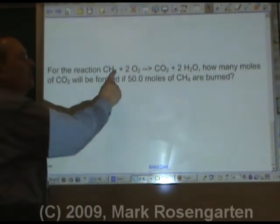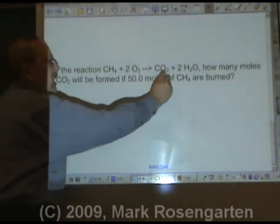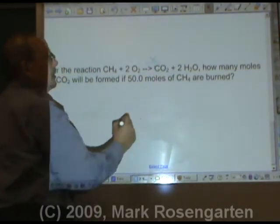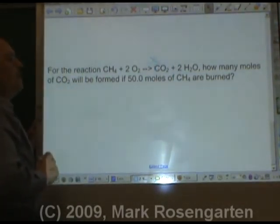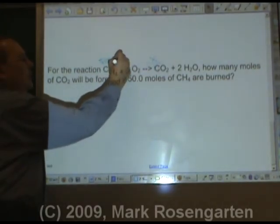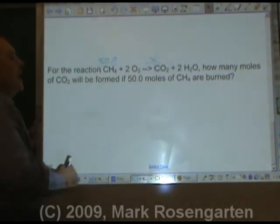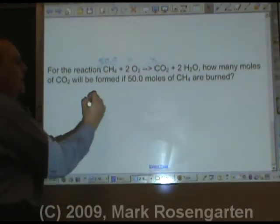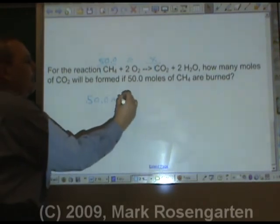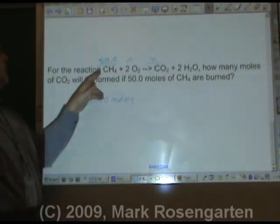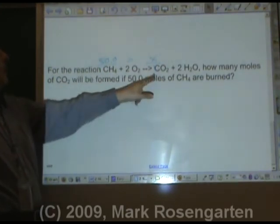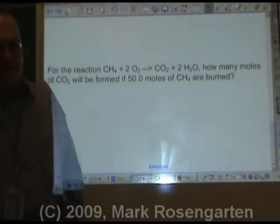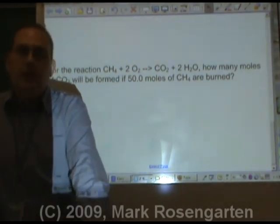For the reaction methane plus two oxygens forms carbon dioxide plus two waters, how many moles of CO₂ will be formed if 50 moles of CH₄ are burned? Now since it's a one to one ratio, you've just solved the problem. 50.0 equals X, 50.0 moles. If we got 50 moles of CH₄, we're going to have 50 moles of CO₂ because they exist in a one to one ratio in this reaction.